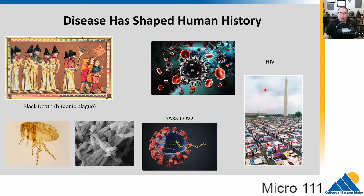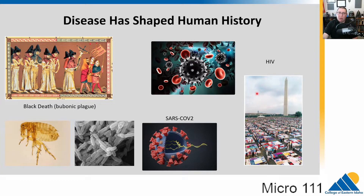HIV has been very impactful — a transmissible virus that causes destruction of the immune system. Human acquired immunodeficiency virus causes the disease AIDS. Hundreds of thousands of people have died from this, and a large number worldwide are living with HIV. A huge amount of research has gone into finding drugs that fight this virus and can keep people alive. We'll talk all about HIV in the virus chapter.